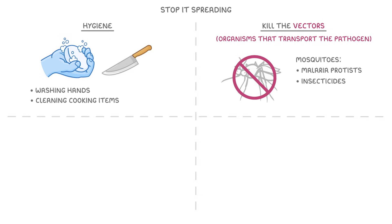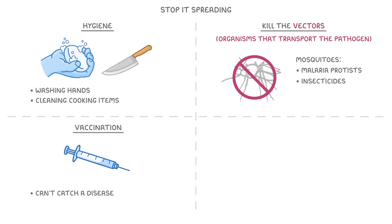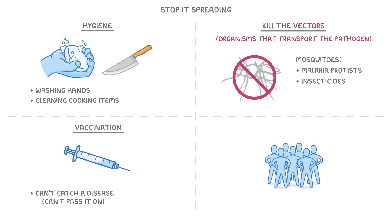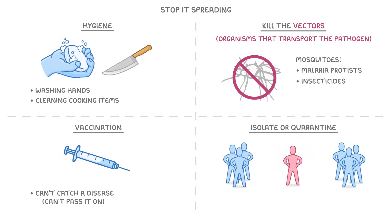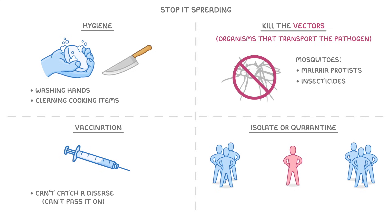The best way to prevent a pathogen from spreading though is just to vaccinate everybody, because if people can't catch the disease in the first place, then they can't pass it on to anyone. If all of these methods fail though, and somebody does catch a disease, then what we can do is isolate or quarantine them. We generally tend to do this only if it's a really serious disease that could really harm other people if they get infected.